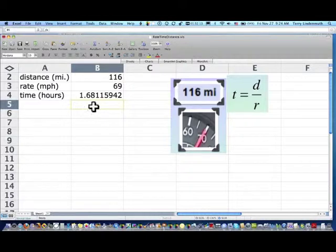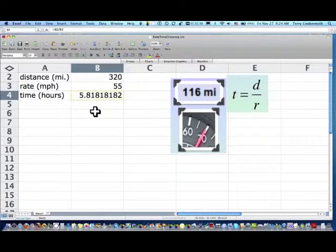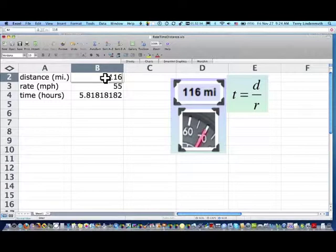Now the advantage of setting it up this way is if we would have to go on a different trip and it was 320 miles at that speed, we would have it recalculate automatically to the new time. If we change our speed to 55 miles per hour, again, it's going to recalculate the time. Going back and putting in my original values.